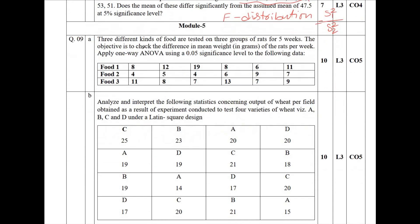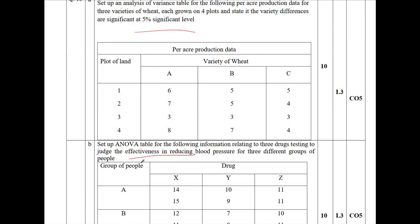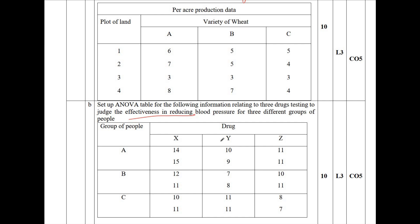Moving to module 5, it is on ANOVA: one-way classification, two-way classification, and Latin square method. One problem will be on one-way ANOVA and one on Latin square. With choice, one problem will be on two-way ANOVA. You can leave either Latin square or two-way ANOVA. If you leave either one topic in this module, nothing to worry — you can answer any full question and score 20 out of 20 from this module.